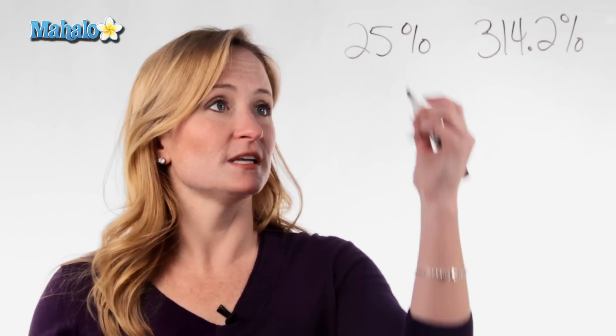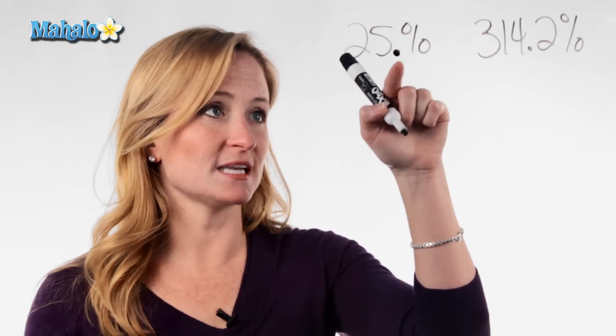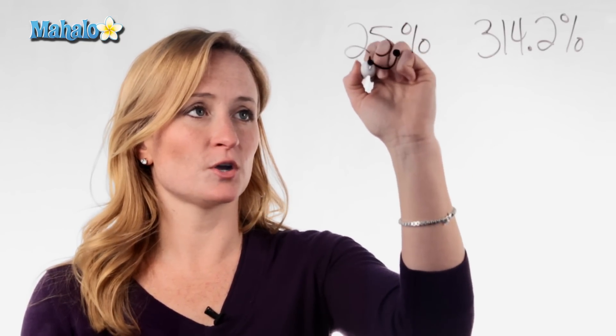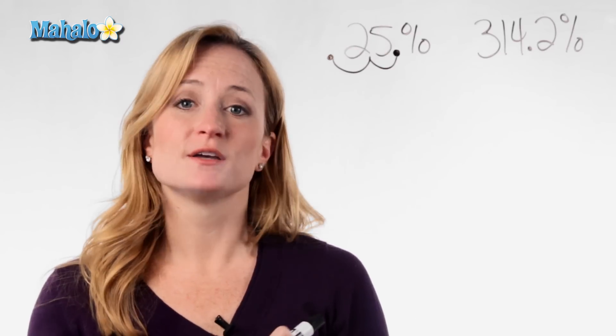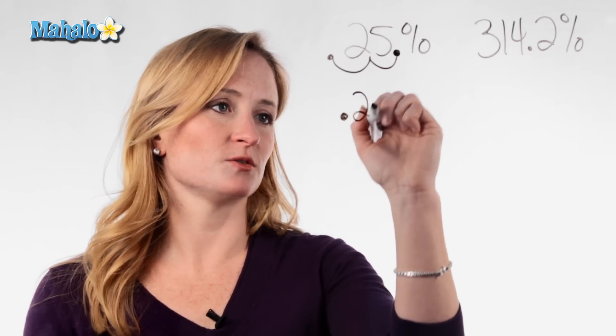So let's say we had 25 percent. If there's no decimal shown, you need to understand that it goes behind the very last number — it's always there. If it's not shown, it's at the very end of the number, so stick it in there. Then in order to convert to a decimal, get rid of that percentage sign and move the decimal over two times. So 25 percent becomes .25.